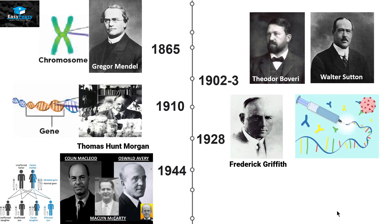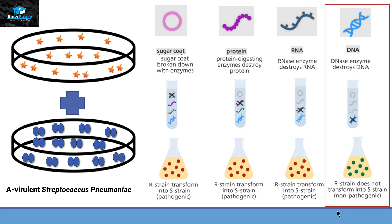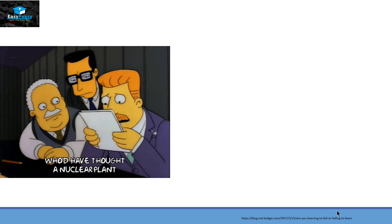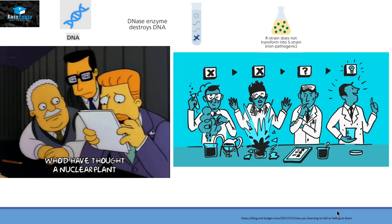Colin MacLeod, McCarty, and Oswald Avery discovered in their experiment with Streptococcus pneumoniae that DNA is the biomolecule which is responsible for transferring the hereditary material from parents to their offspring. But they were still confused, thinking that their procedure might have some type of contamination responsible for transferring the genetic material.